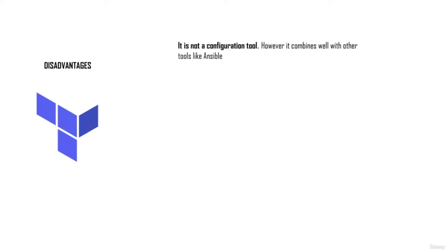A configuration tool is used to insert, update, or manage software or applications within virtual machines, but Terraform does combine with tools like Ansible to do the same. You should consider Terraform specifically as a tool for creating infrastructure — it's not advisable to use it for configuring software or applications within virtual machines. That is one of the disadvantages of using Terraform.